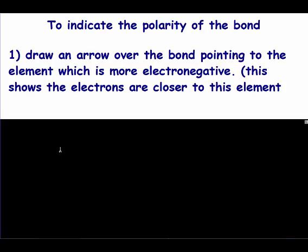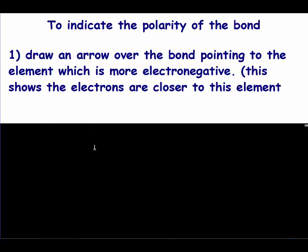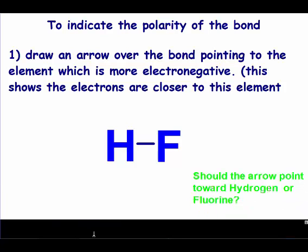If a problem tells you to indicate the polarity of the bond, the first thing you're going to do is draw an arrow over the bond pointing to the element which is more electronegative. You would only do this if it's a polar bond. When drawing the arrow towards the more electronegative, this shows that the electrons are closer to that element. For example, in HF, we know that fluorine was 4.0 and hydrogen was 2.1. It points towards the more electronegative element, so it should point towards fluorine.